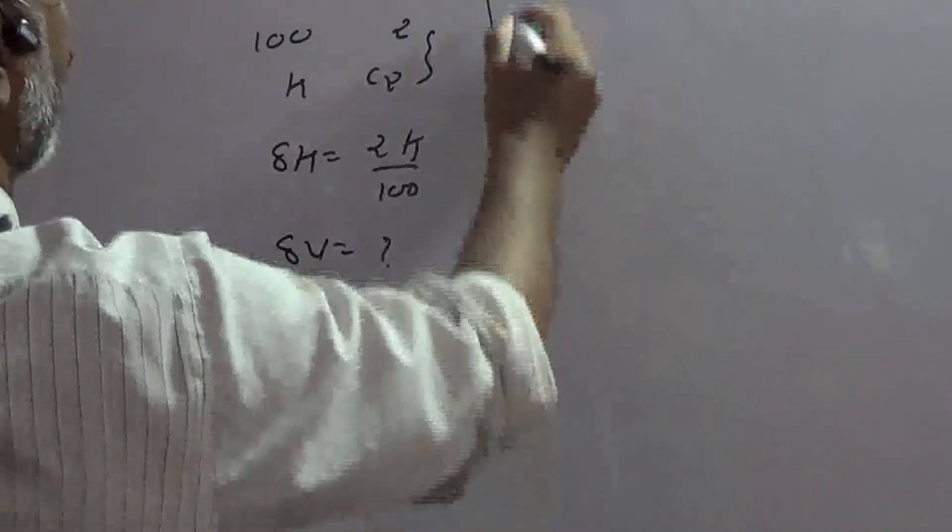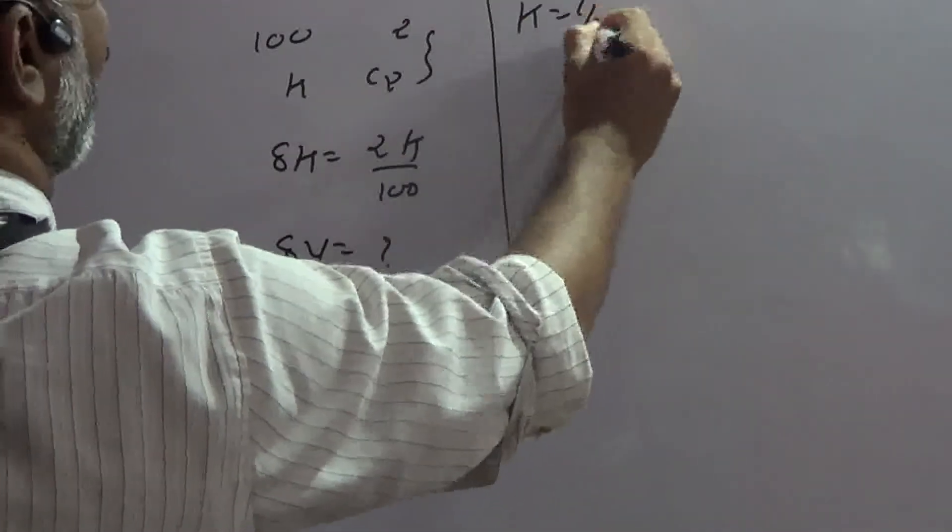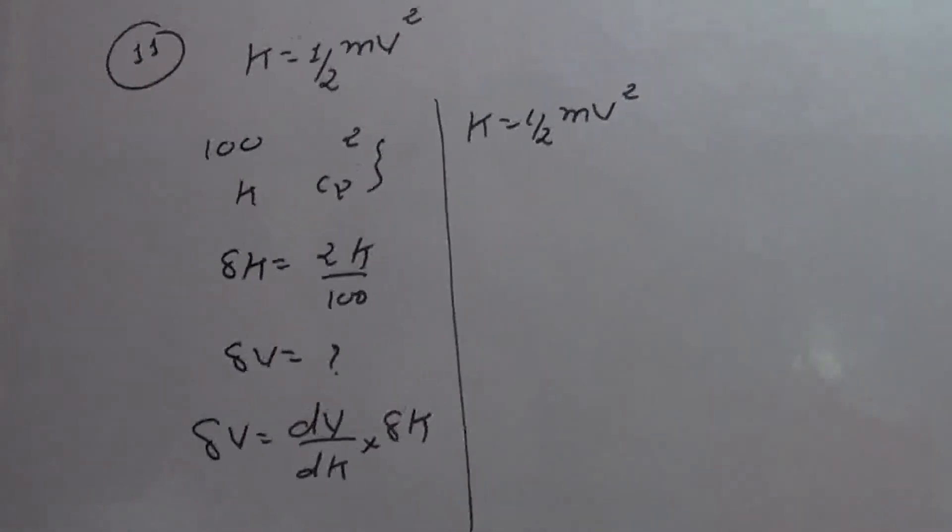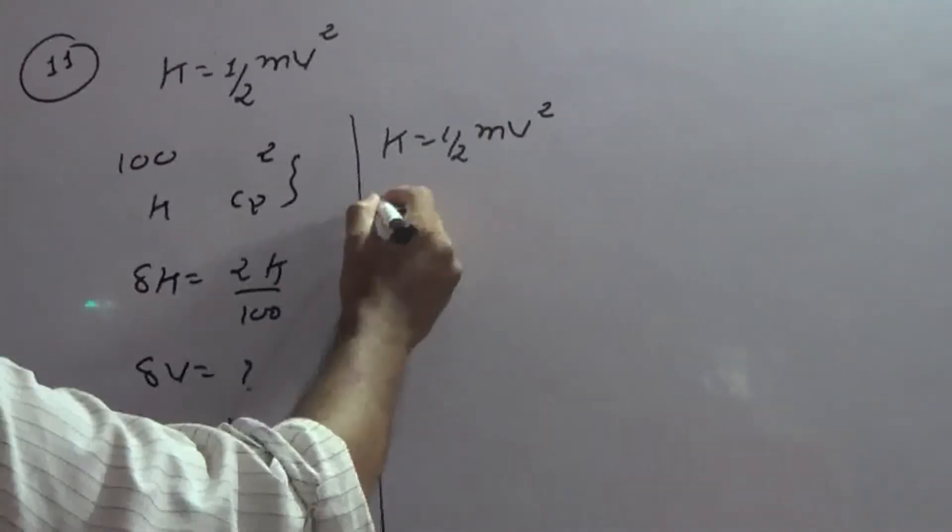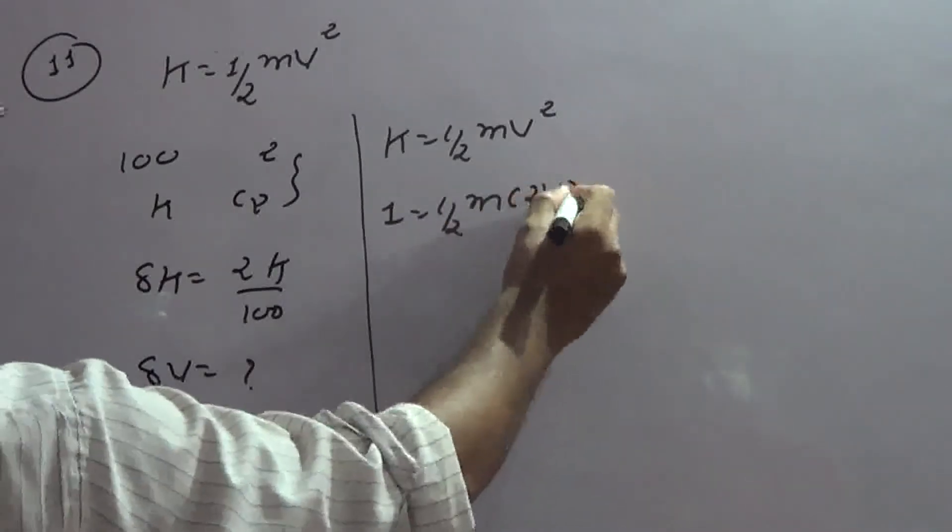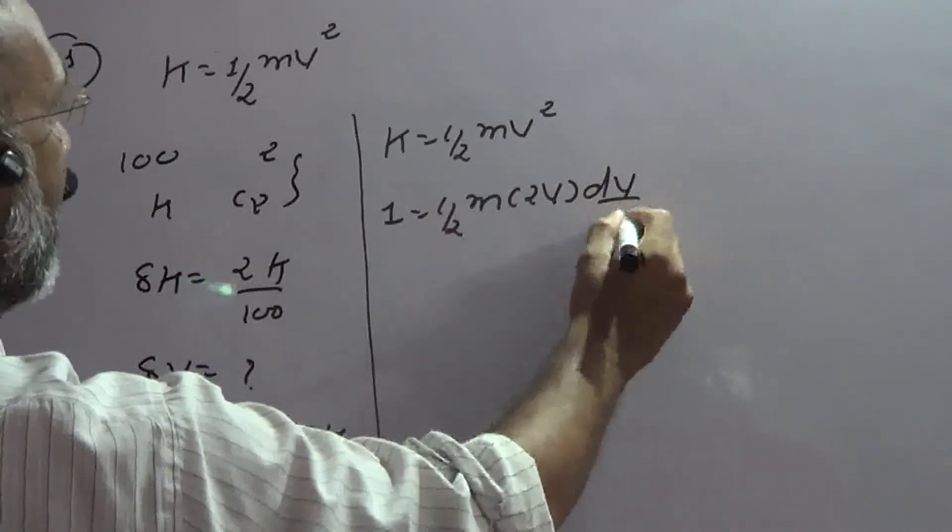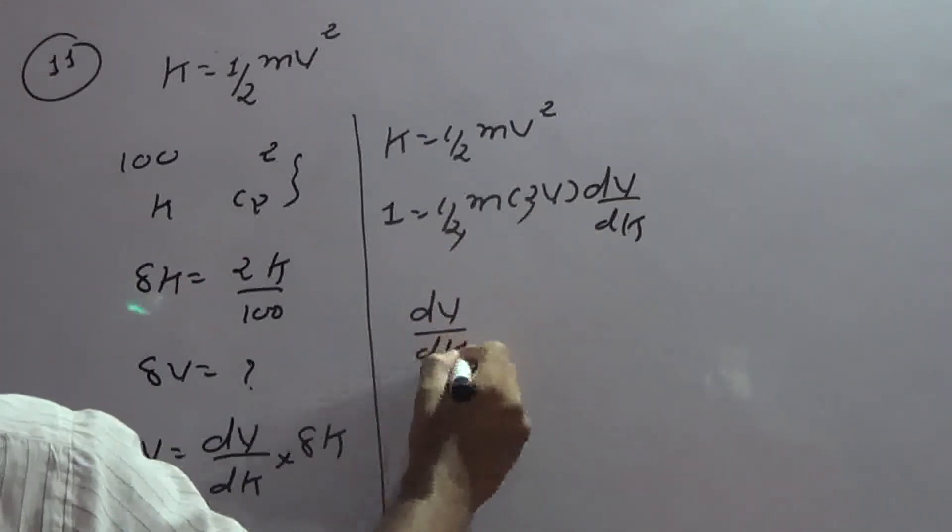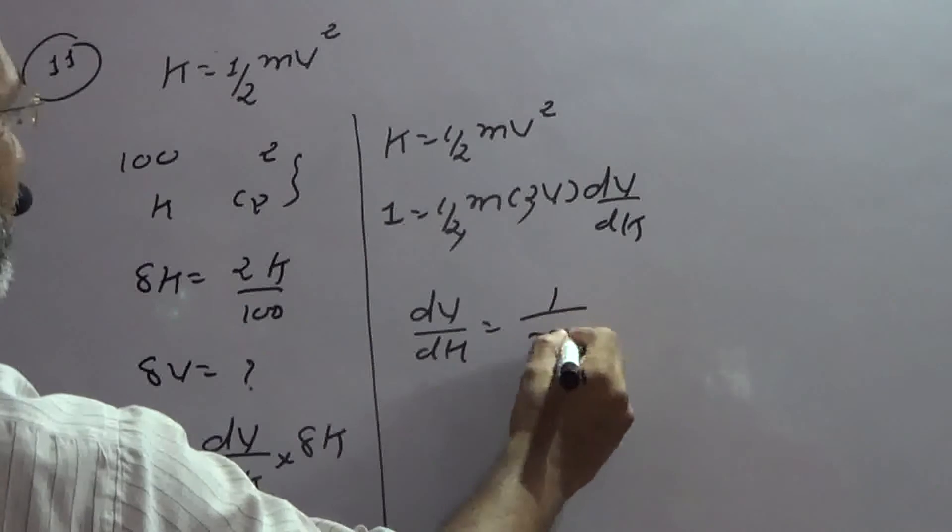Ab mere baat suno ki K equals to half mv square. Mere ko derivative of velocity with respect to K chahiye, kinetic energy. K with respect to K is 1. M constant, this is 2v into dv by dK. 2 cancel. So dv by dK equals to 1 upon mv.